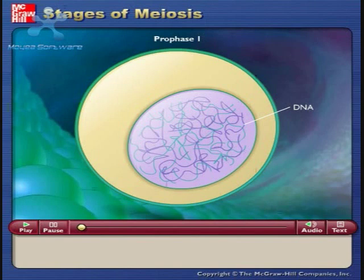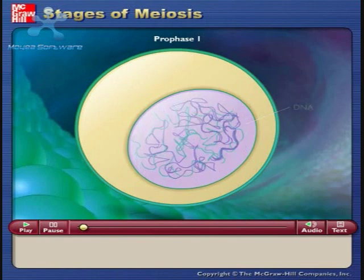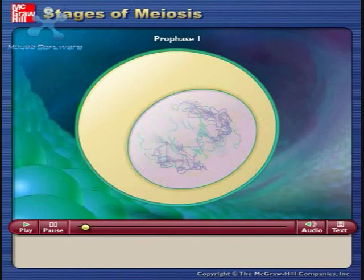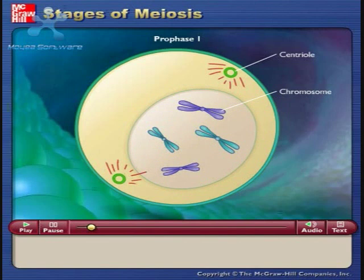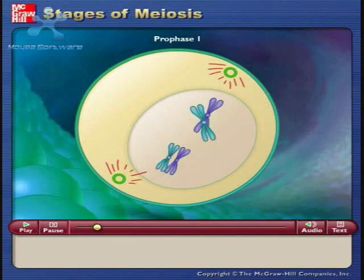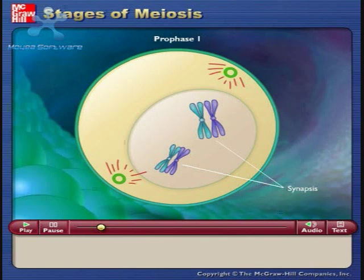In prophase I, the DNA coils tightly and individual chromosomes become visible under the light microscope. Homologous chromosomes become closely associated in synapsis and they exchange segments by crossing over.